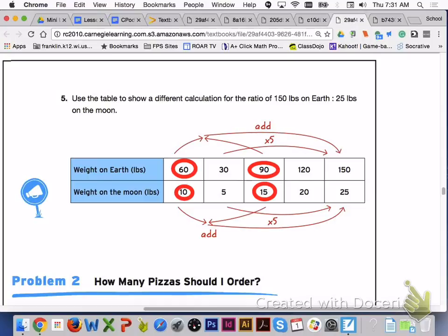For number 5, one of the calculations that you could have used was to add 60 and 90 to get 150 and 10 and 15 to get 25. You could have also multiplied 30 times 5 and 5 times 5 in order to get 150 to 25 for the equivalent ratio. Your scaling up factor is 5.